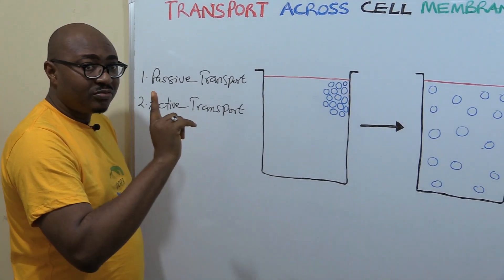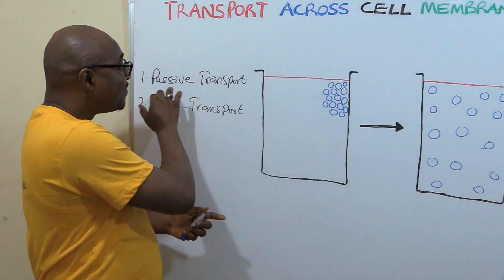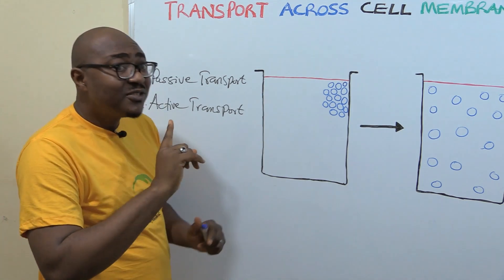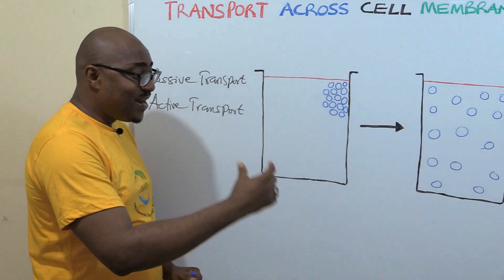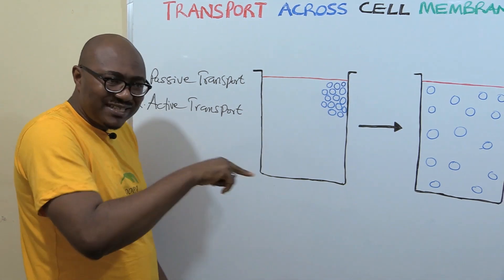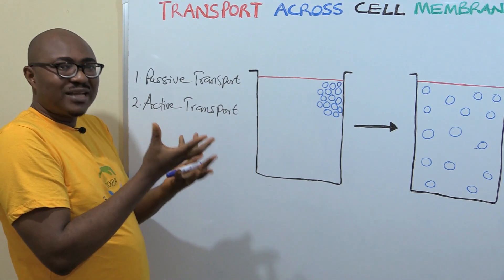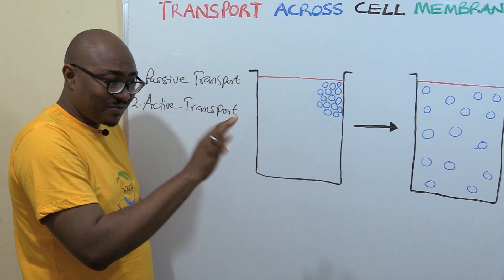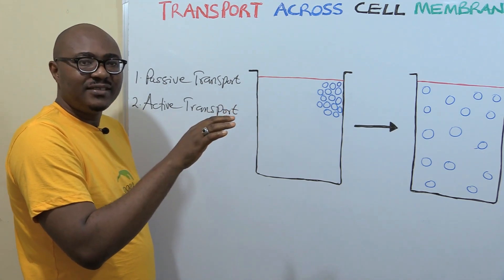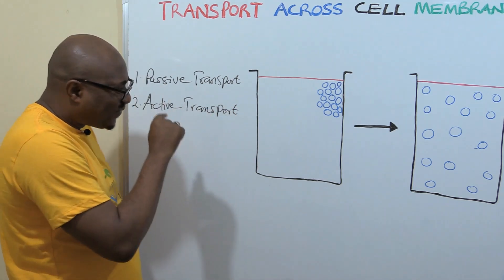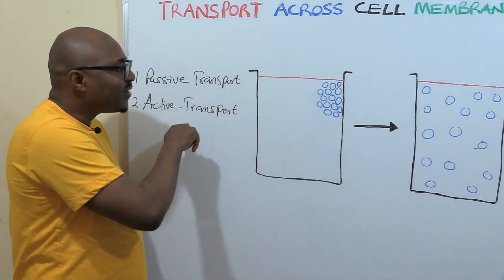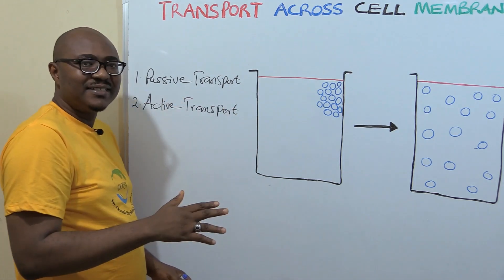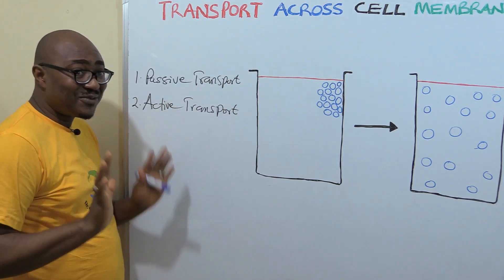A lot of people say passive transport does not use energy while active transport uses energy — that's wrong. Any movement involves energy. As you see my hand moving, energy is moving it. The difference is the type of energy, not that passive transport has no energy — there is still energy involved.